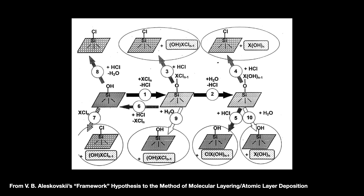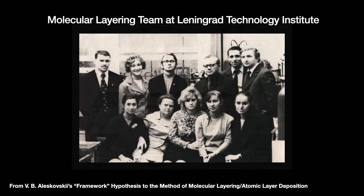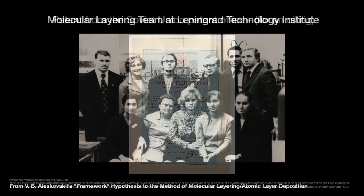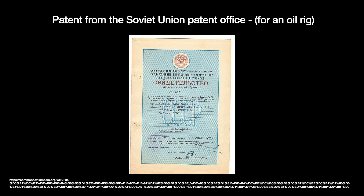But many prominent Soviet scientists did not understand molecular layering. Furthermore, they did not believe that it was even possible to create a structure with atomic precision. When Alekskovsky and Koltsov attempted to patent the process in April 1971, the Soviet Patent Office remarkably rejected it.